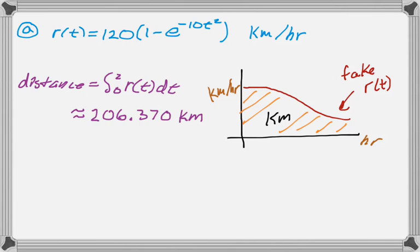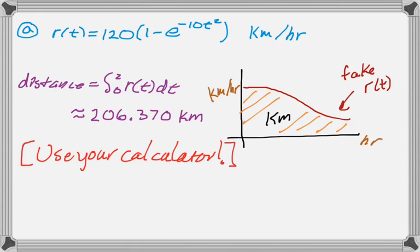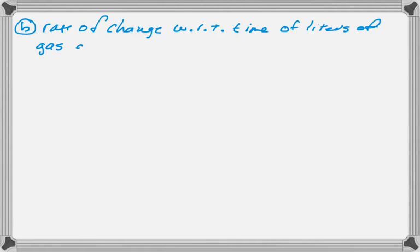I would probably store that value, because you're going to actually need it later, though you don't really have a reason to know that right now. But anyway, make sure you're using your calculator to get that actual value. So the next question, what we want to do is figure out the rate of change with respect to time of the liters of gasoline at T equals two.